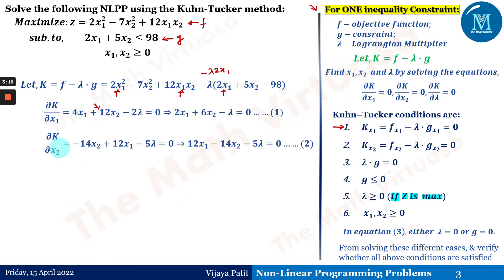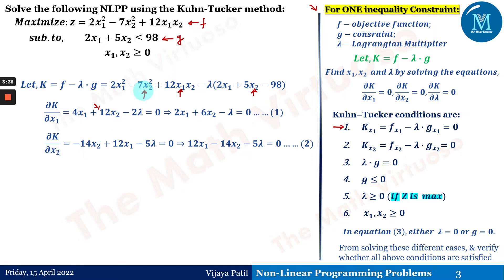The second condition is ∂K/∂x₂ = 0. The terms containing x₂ are −7x₂², 12x₁x₂, and −5λx₂. Differentiating gives −14x₂ + 12x₁ − 5λ = 0, which we rewrite as 12x₁ − 14x₂ − 5λ = 0. That is the second condition.